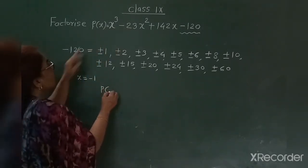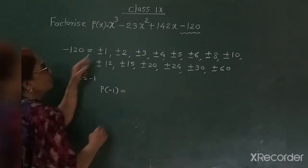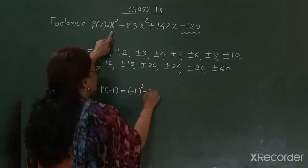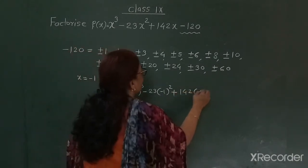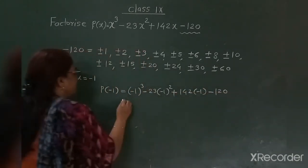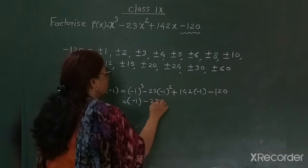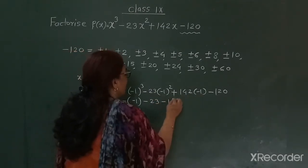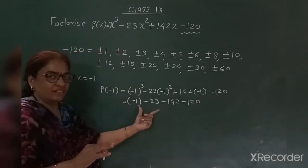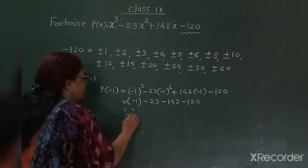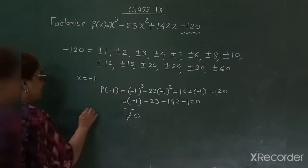We evaluate this cubic polynomial where x is negative 1. So: negative 1 cubed minus 23 times negative 1 squared plus 142 times negative 1 minus 120. Negative 1 cubed gives negative 1, then minus 23, then negative 142, and last is minus 120. The answer is some negative number, not equal to 0. So P of negative 1 is not 0.